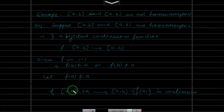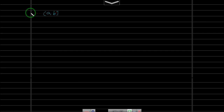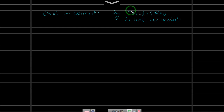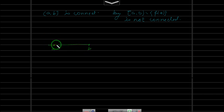If we remove the singleton {a} from the domain [a,b], what we have is (a,b], which is connected. We already proved that a subset of R is connected if and only if it is an interval. So (a,b] is an interval and hence connected.